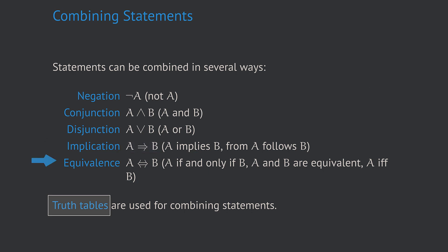But first let's look at the last combination, the equivalence. The equivalence is denoted by a double arrow and is true if and only if both a and b are true or both a and b are false.